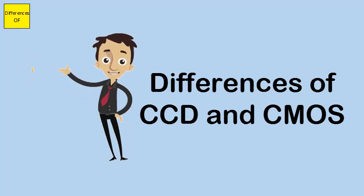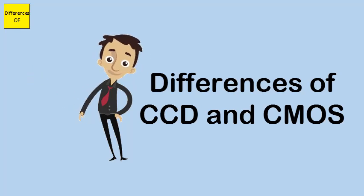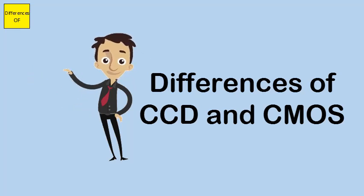Similarities: both CCD and CMOS are two types of image sensors that are being used in digital cameras.